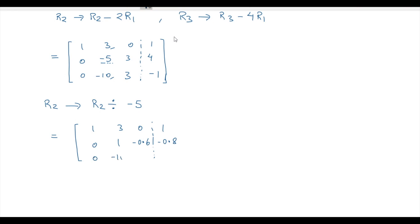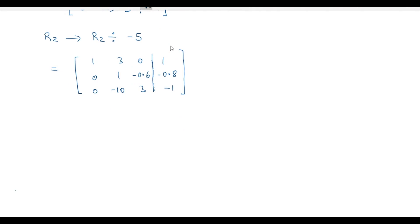This is [0 -10 3 | -1]. Now in order to make these two elements to be 0, the operations we'll do is row 1 as row 1 minus 3 times row 2 and row 3 as row 3 plus 10 times of row 2.